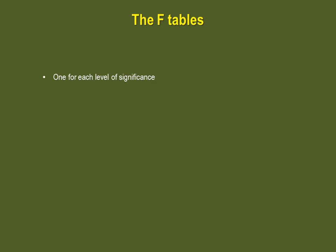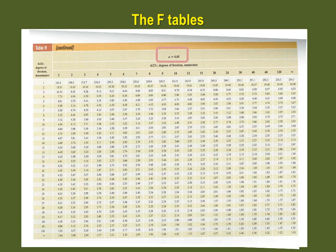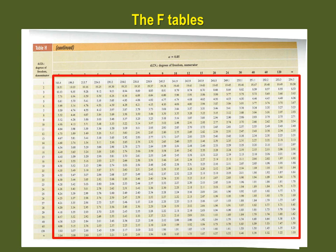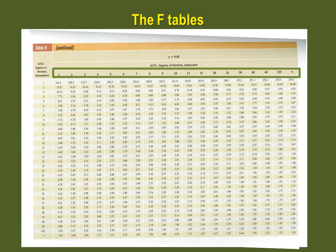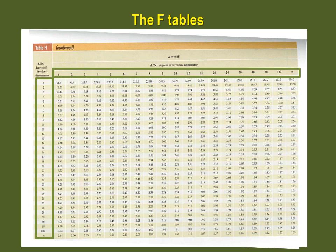In order to identify our critical values, we must go into the F tables. The F tables are slightly different from the ones we've had before — there is one table for every level of significance. It's important to note that the level of significance for the table refers to the area for a one-tailed test. So if you are doing a two-tailed test, you must use the table for your level of significance divided by 2. Each critical F value in the table is associated with a specific combination of degrees of freedom: across the top are the degrees of freedom for the numerator, and on the left are the degrees of freedom for the denominator.